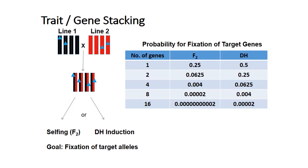There is an approach called trait or gene stacking which can be easily done through double haploid induction. Line 1 and line 2 are taken and crossed. In one approach selfing is done and in another double haploid induction is made, with the goal of fixing the target alleles. In the table, for one gene in F2 the fixation rate is 0.25 whereas in double haploid it is 0.5. For 16 genes, the possibility of fixing the target gene in F2 is very minute, but in double haploid it can be found better than the F2 population.